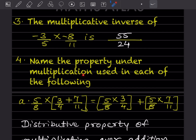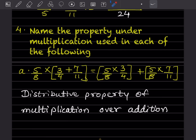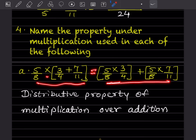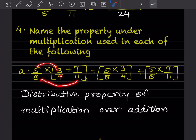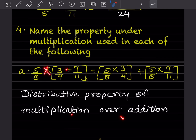Name the property of multiplication used in each of the following. On the left-hand side, when we expand, we get (5/8) × (3/4) + (5/8) × (7/11). This is the distributive property of multiplication — specifically, multiplication over addition.